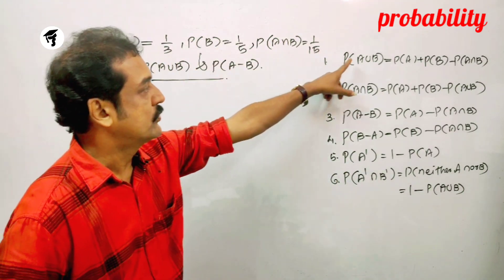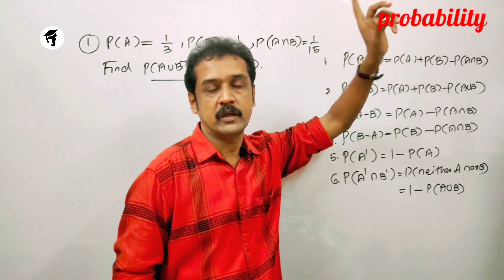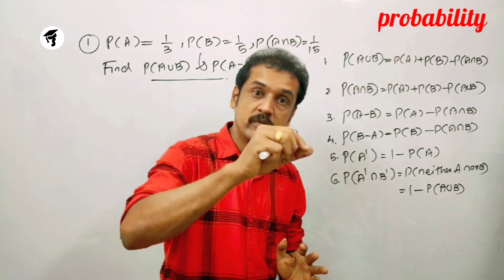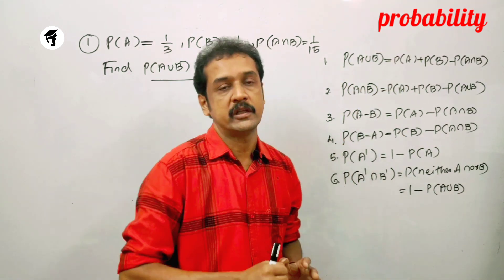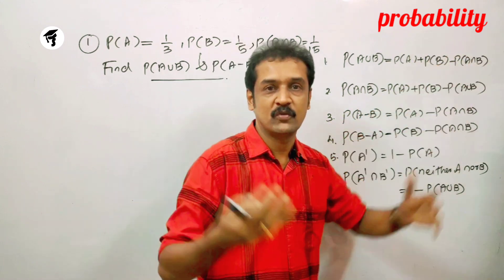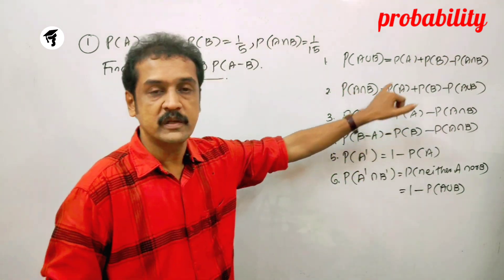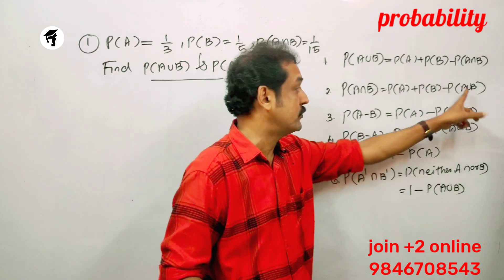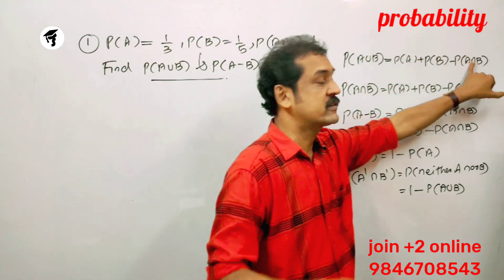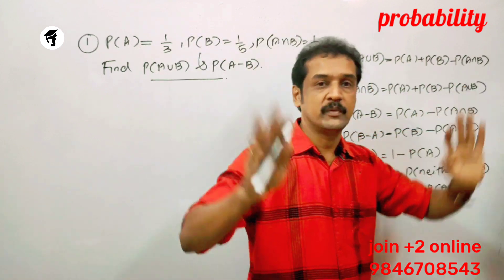First, P of A union B — we are going to learn from the probability of A union B. That is P of A plus P of B minus P of A intersection B. P of A intersection B can be rearranged as P of A plus P of B minus P of A union B.